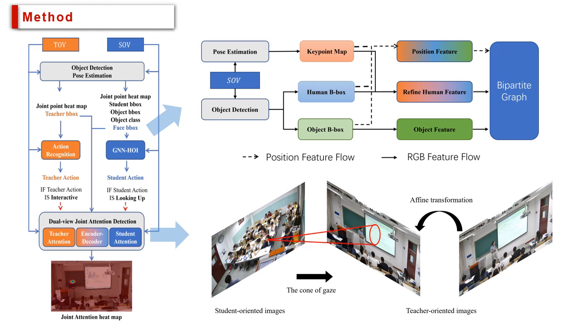Third, the encoder-decoder takes the teacher-student attention heatmap and the features of the teacher video frame as input, and finally predicts the joint attention heatmap.